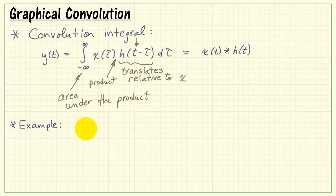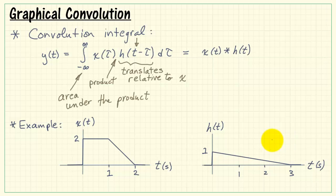This is best understood by considering a specific example. Let's look at this particular shape for x of t. It jumps up to 2 at time 0, is constant, and then ramps back down to 0 at time 2. The impulse response has been 0, jumps to 1, and then tapers off back to 0 at time 3.